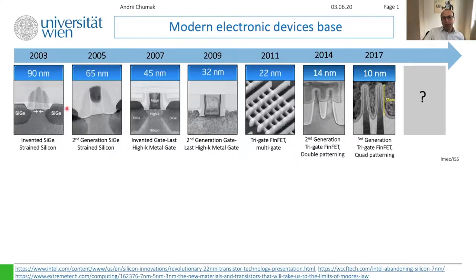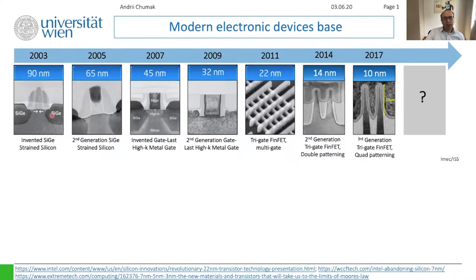Here you see the evolution of technology over the last around 20 years. In 2003 the feature size of a semiconductor transistor was 19 nanometers. The chip is silicon — silicon is important because it is relatively easy to fabricate. The gate, source, and drain were made of silicon germanium — germanium has higher mobility and allows you to decrease energy consumption. In this standard field effect transistor, current flows from source to drain only when you apply voltage to the gate.